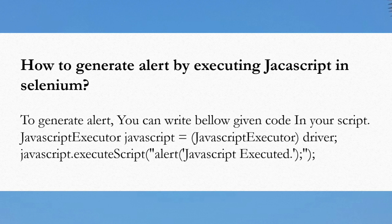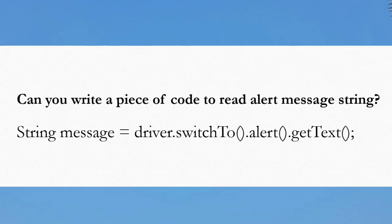The next question is: how to generate an alert by executing JavaScript in Selenium? To generate an alert, write code like: JavascriptExecutor js = (JavascriptExecutor) driver; then call js.executeScript("alert('message')"). The next question is: can you write a piece of code to read an alert message string? Yes — you can read the alert message string using: String message = driver.switchTo().alert().getText(). Using getText() you can read the alert message.